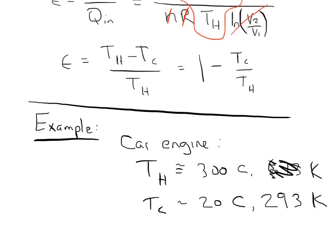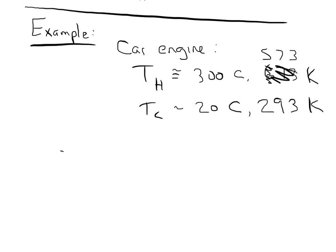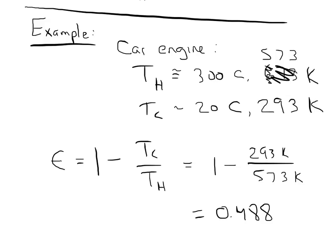This is actually a typo. It should be 573. And the cold temperature is going to be something like room temperature, somewhere around 20 Celsius, or 293 Kelvin. What we can do now is just calculate the efficiency. The efficiency is just going to be 1 minus T cold over T hot. Of course, it's very important to put this in terms of the temperature in Kelvin. So, it's going to be 1 minus 293 Kelvin over 573 Kelvin. When I run the numbers, I see that this gives me something like 0.488. That means that this is about 49% efficient.